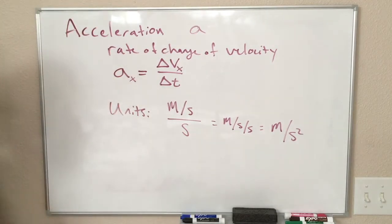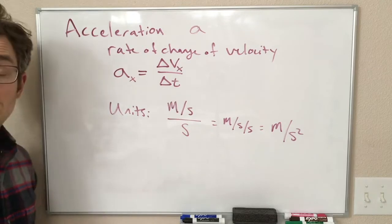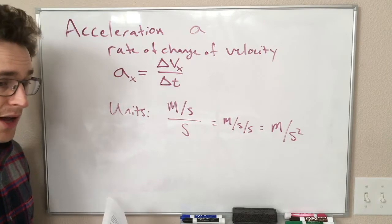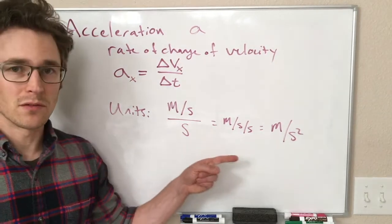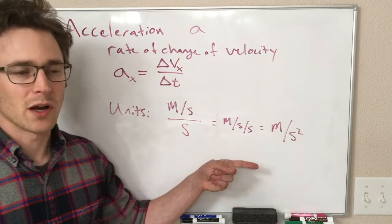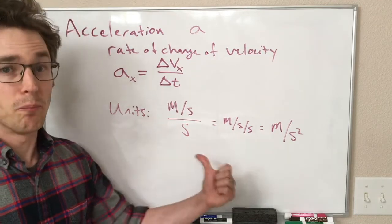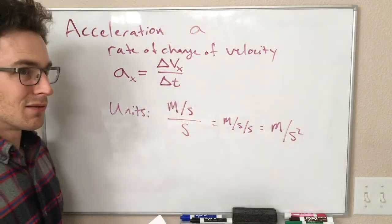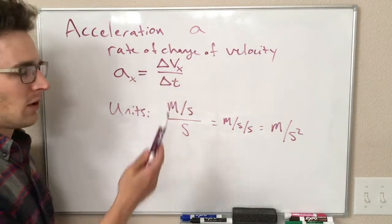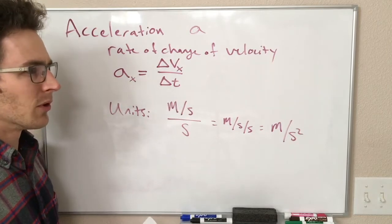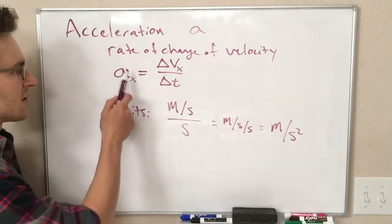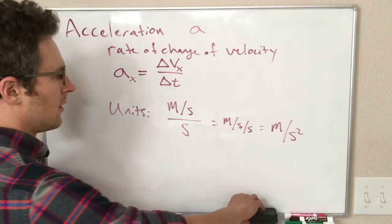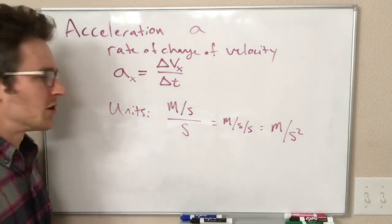Looking at the acceleration equation, we see another important thing: velocities can be positive or negative — positive is to the right, negative is to the left. So delta V, our change in velocity, could also be a negative number, which means our acceleration could be a negative number as well. So what does a positive or negative acceleration mean?